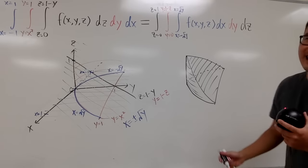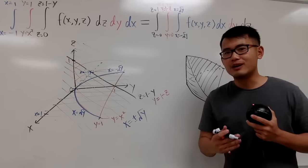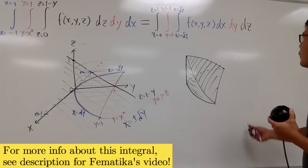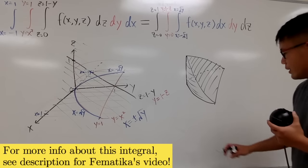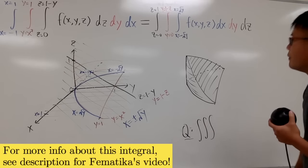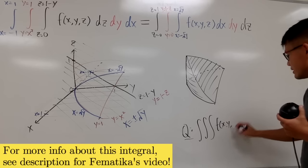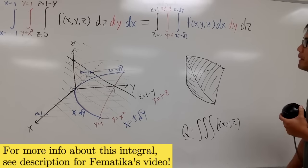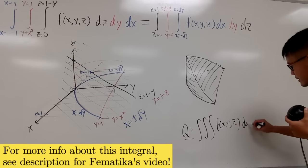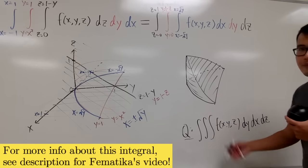So the new order is dx dy dz, with x from negative square root of y to square root of y, y from 0 to 1 minus z, and z from 0 to 1. The challenge is: can you figure out the other orderings? For example, how would you set up the triple integral with dy first, then dx, then dz?